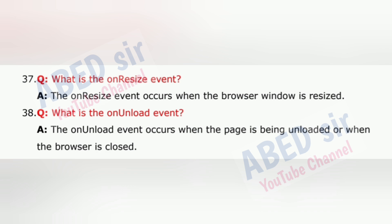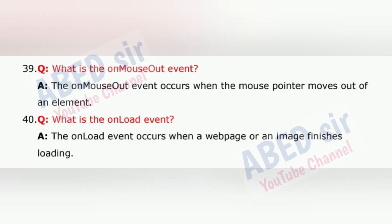Question 38: What is the onunload event? The onunload event occurs when the page is being unloaded or when the browser is closed. Question 39: What is the onmouseout event? The onmouseout event occurs when the mouse pointer moves out of an element.